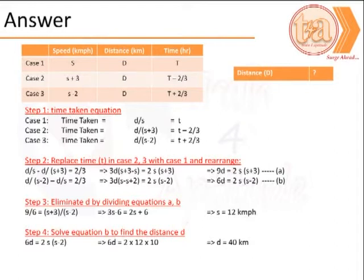We have two equations. We could choose any of the two equations a or b and substitute the value of s to find the value of d. d therefore is 40 km.